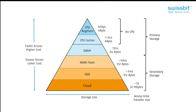To start off, let's take a look at the memory hierarchy to understand the difference between NAND and other types of memory. Generally speaking, primary memory at the top of the pyramid is closer to the microcontroller and boasts incredibly fast access times. Secondary memory is geared towards mass storage and often uses non-volatile memory.